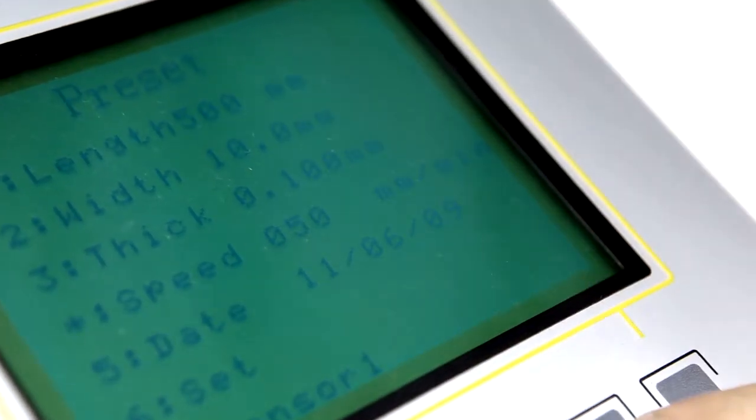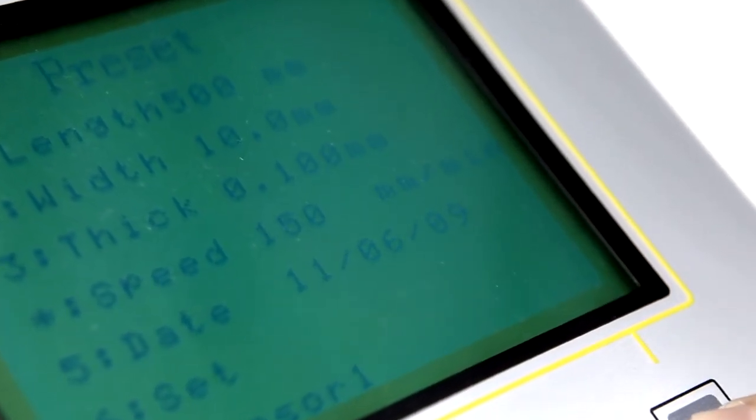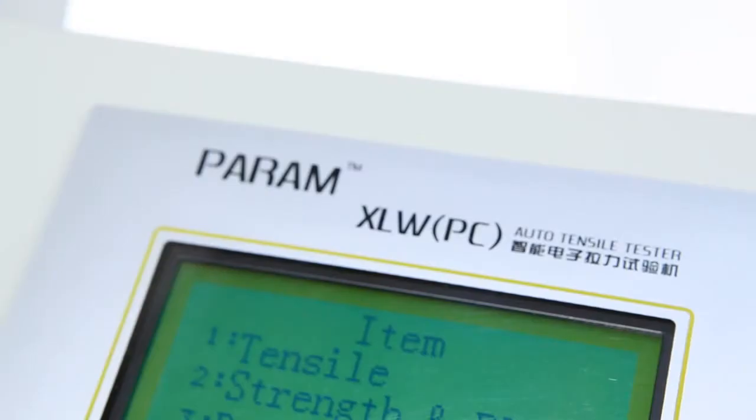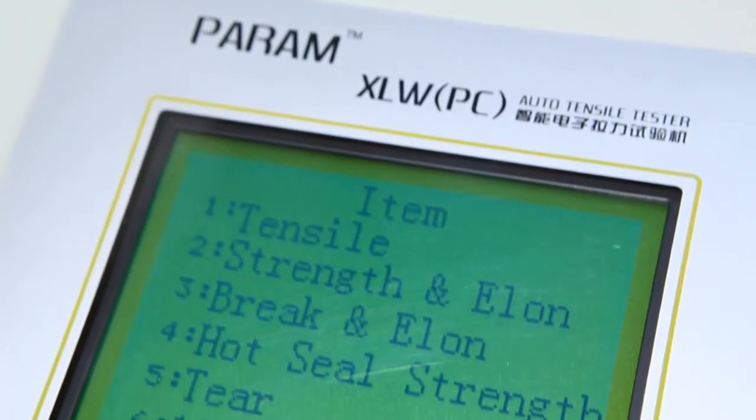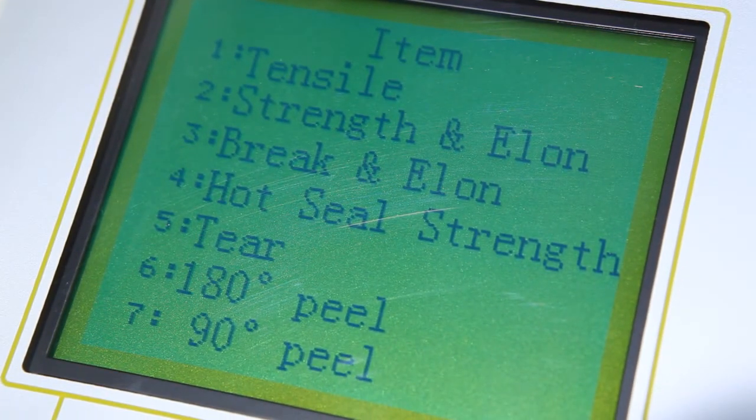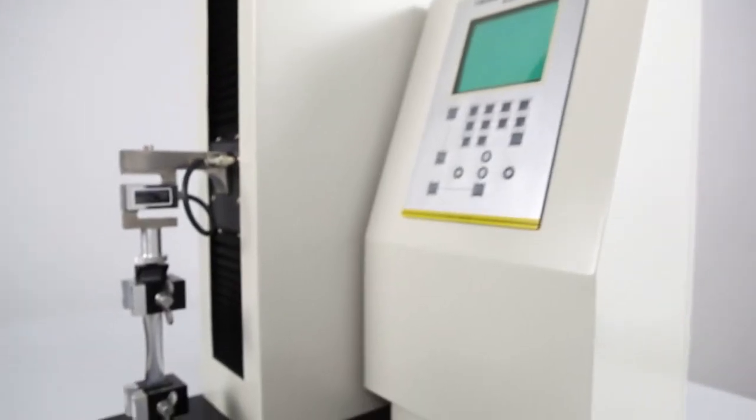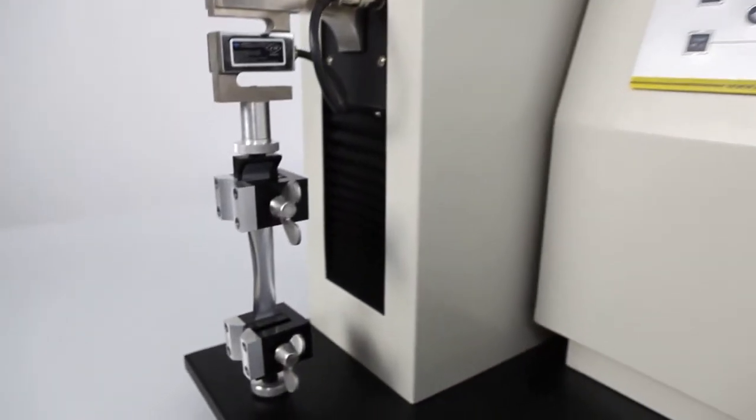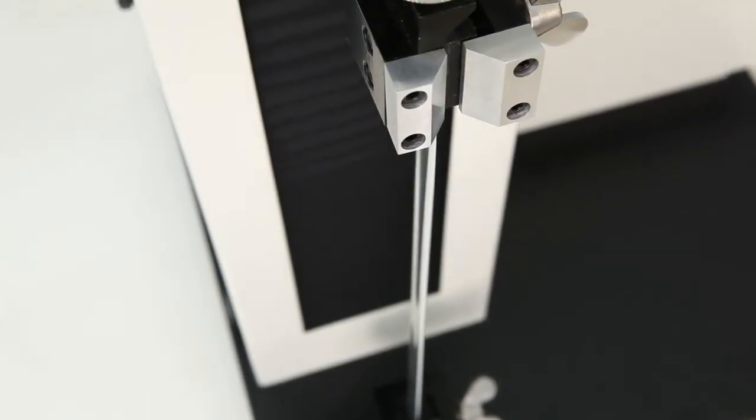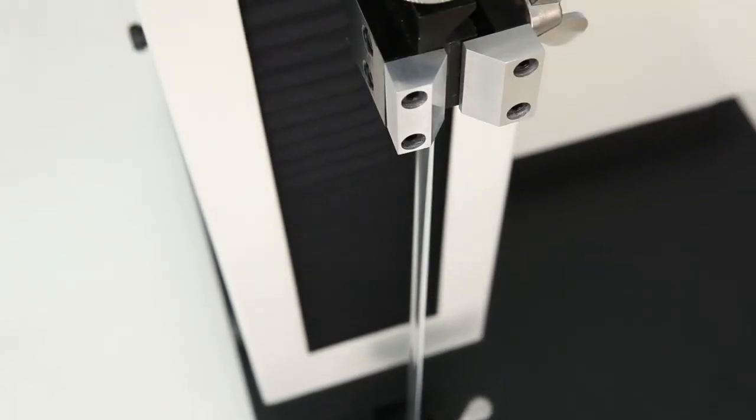This instrument can perform tests at seven different testing speeds that apply to different industry standards. They can be used to measure tensile strength, peeling force, tearing force, heat seal strength, and various other properties of packaging materials, and provides research institutions and manufacturers with the excellent solution for analyzing the relevant physical attributes of materials.